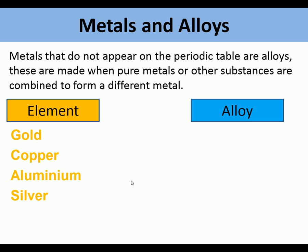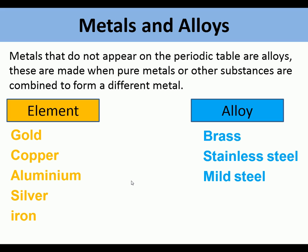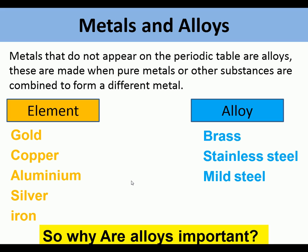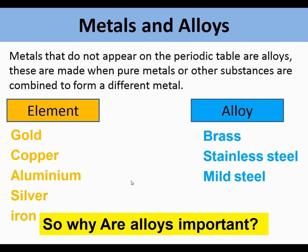Gold, copper, aluminium, silver, and iron are elements or pure metals. Brass, stainless steel, and mild steel are alloys.